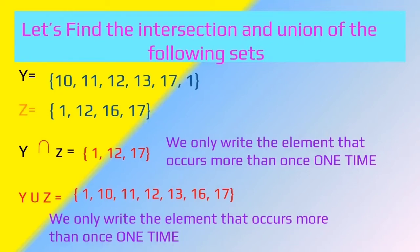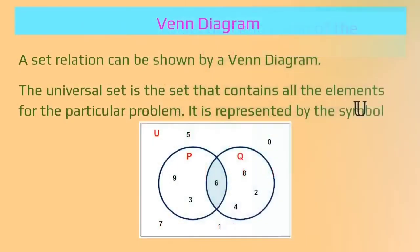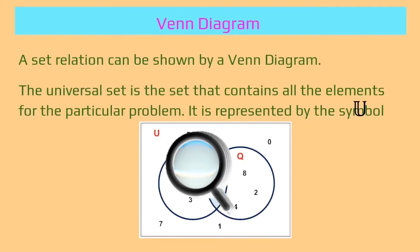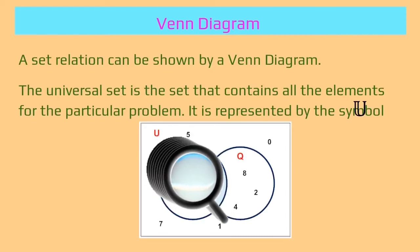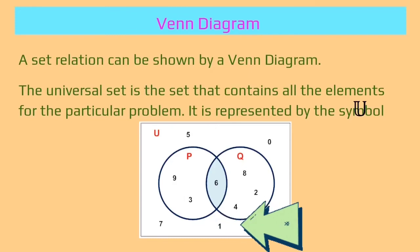Look carefully at the elements of Y and Z, and see how we use the set symbols to show the union and the intersection. Once you have mastered sets, you will be able to construct your very own Venn diagram. A Venn diagram shows a set relation and is usually enclosed in a rectangle. There is something called the universal set — everything inside the rectangle, even if it is outside of the circles.